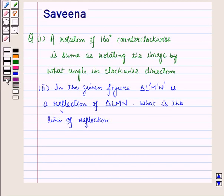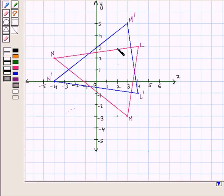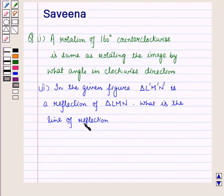Hello and welcome to the session. In this session we will discuss a question with two parts. First part: a rotation of 160 degrees counterclockwise is the same as rotating the image by what angle in the clockwise direction? And second part: in the given figure, triangle L'M'N' is a reflection of triangle LMN, and we have to find the line of reflection.